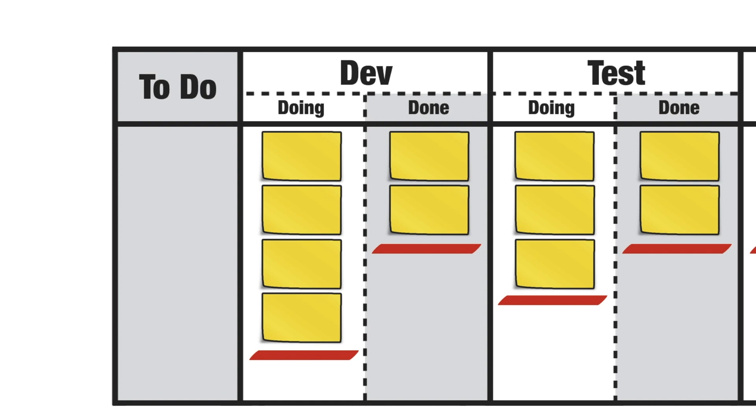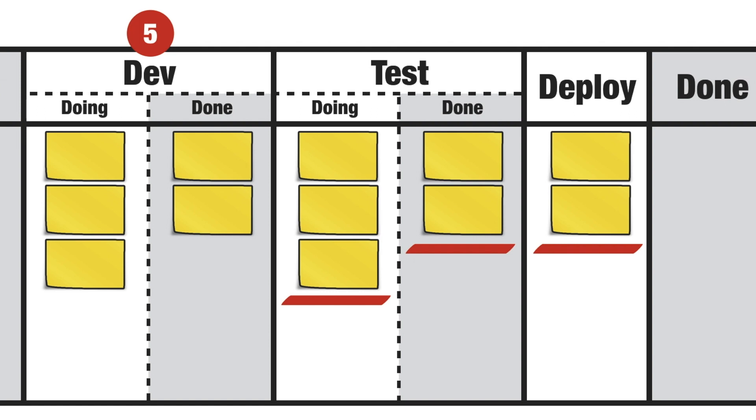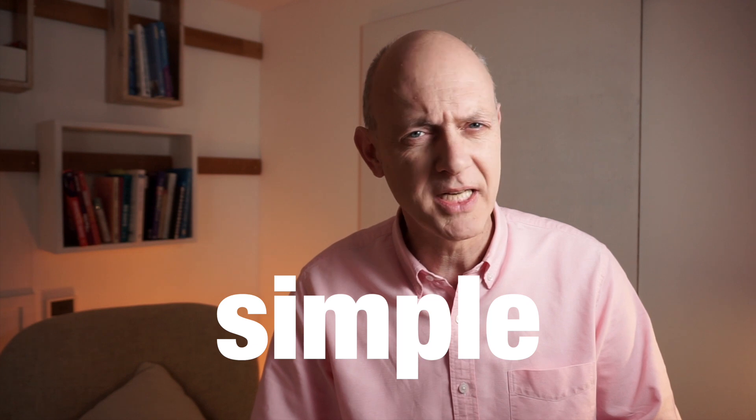Before we move on, I'm going to make a small optimization. As both of these columns belong to the development team, instead of having separate WIP limits of four and two, I'm going to impose a shared WIP limit of five. I can't use the red lines anymore, so I'm going to replace them with a number at the top. Similarly for test, in place of limits of three and two, I'm going to impose a shared WIP limit of four. As you'll notice, I've just reduced the work in progress of the system as a whole by two, and that should be good news. All things being equal, items will now get across the board that little bit quicker — though imposing WIP limits is one of those things that is simple but not necessarily easy.